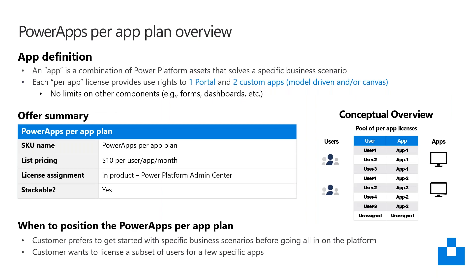Looking at the Power Apps Per App Plan overview in a bit more detail, an app is a combination of Power Platform assets that solves a specific business scenario. The Power App provides use rights to one portal and two custom apps. This can be model driven or canvas. There are no limits on any other components, such as forms and dashboards.